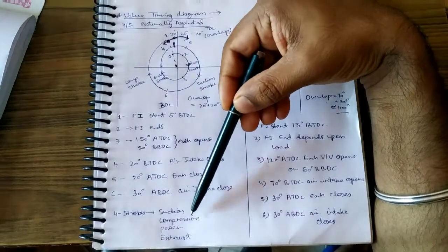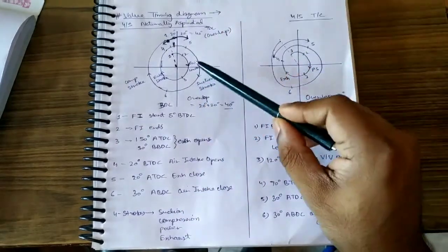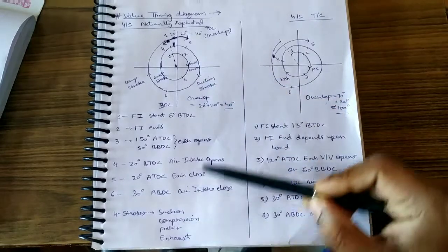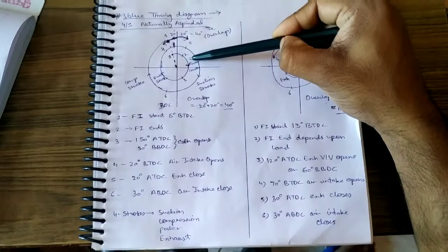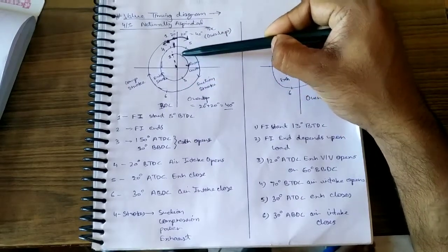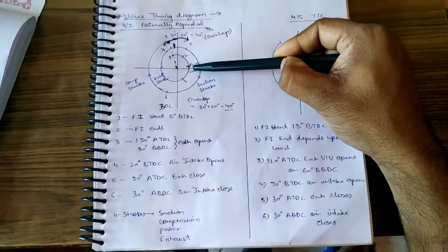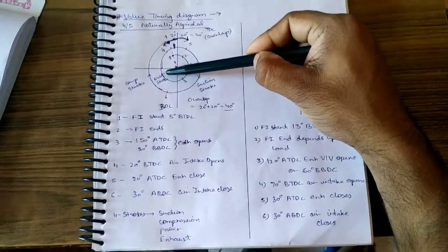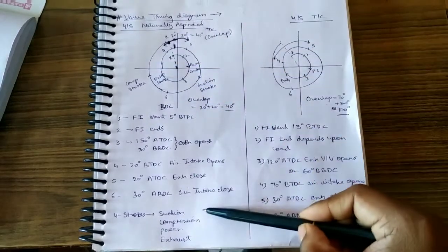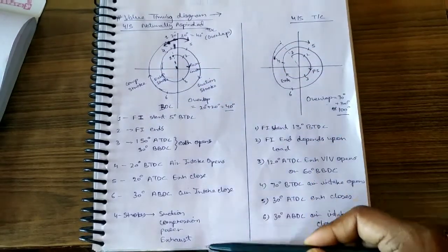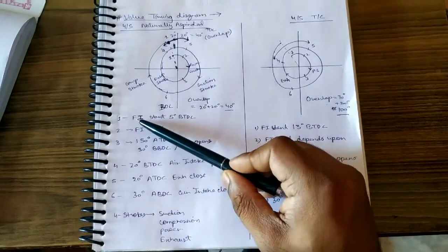As you know, there are four strokes — suction, compression, power, and exhaust — in the four-stroke engine. This diagram starts from the power stroke, where the piston is coming down from TDC to BDC. We will cover the power stroke first, then exhaust stroke, then suction stroke, and then compression stroke, following the normal cycle order.